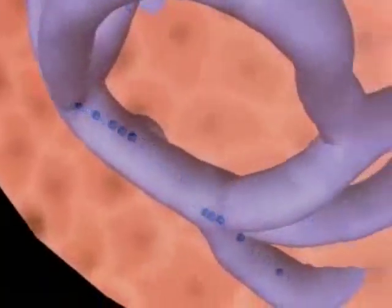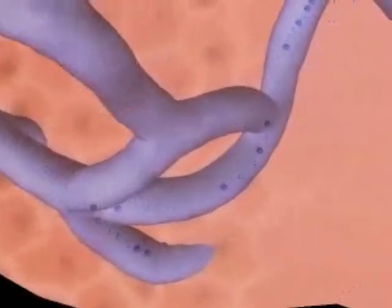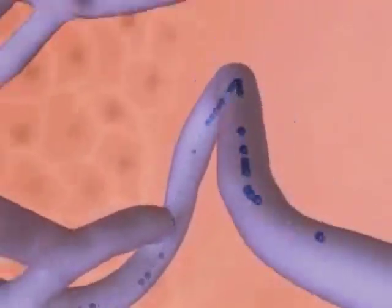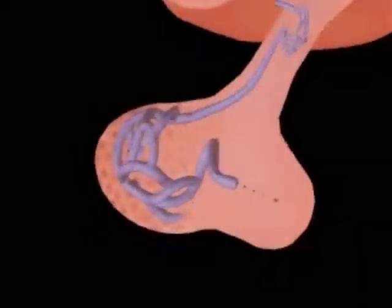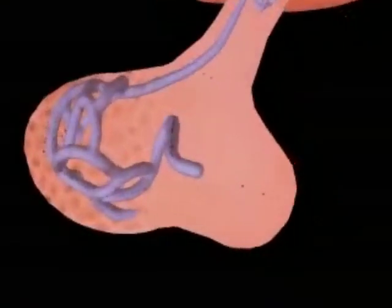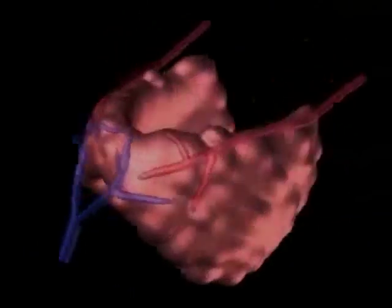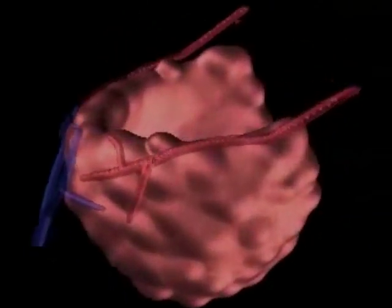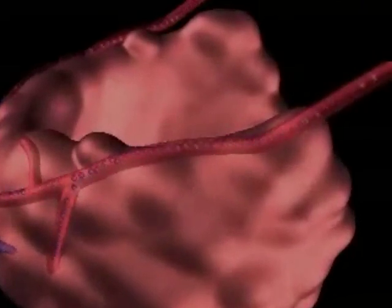TSH enters the bloodstream and is carried to the thyroid gland. At the thyroid gland, TSH stimulates the production and release of thyroxin, a hormone that regulates the metabolic rate of all the cells in the body.